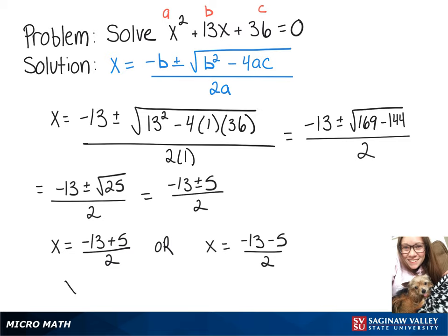So, negative 13 plus 5 is negative 8 divided by 2 gives us negative 4. Negative 13 minus 5 gives us negative 18 divided by 2 gives us our other answer, negative 9.